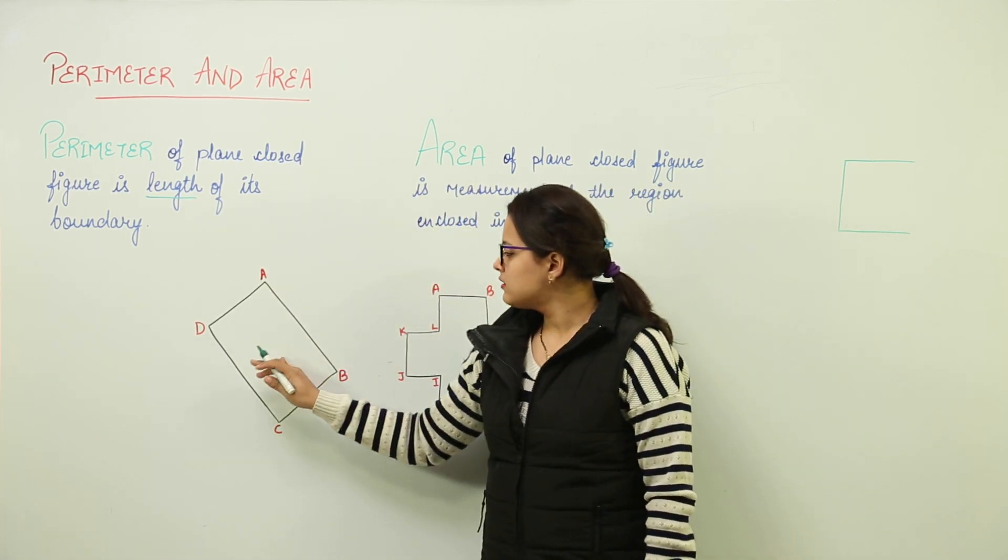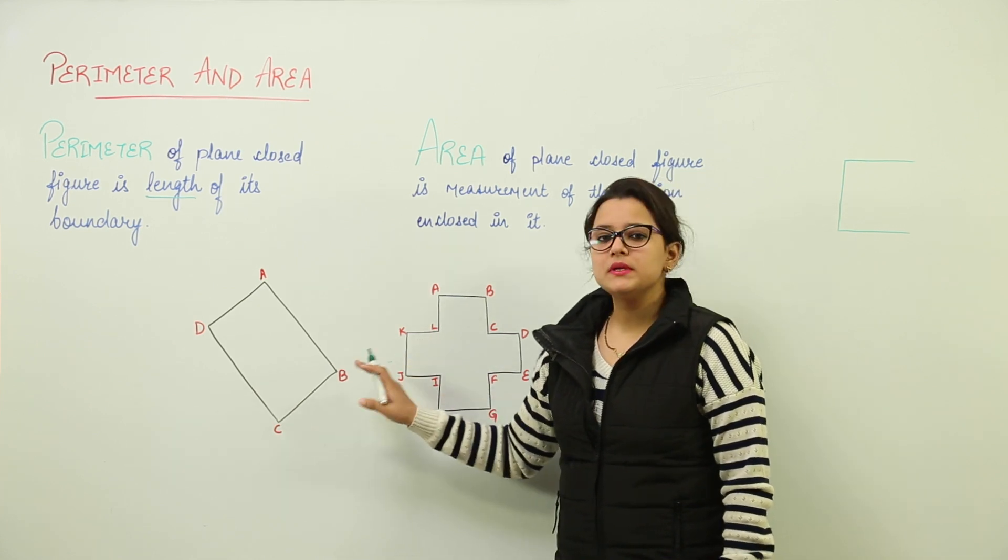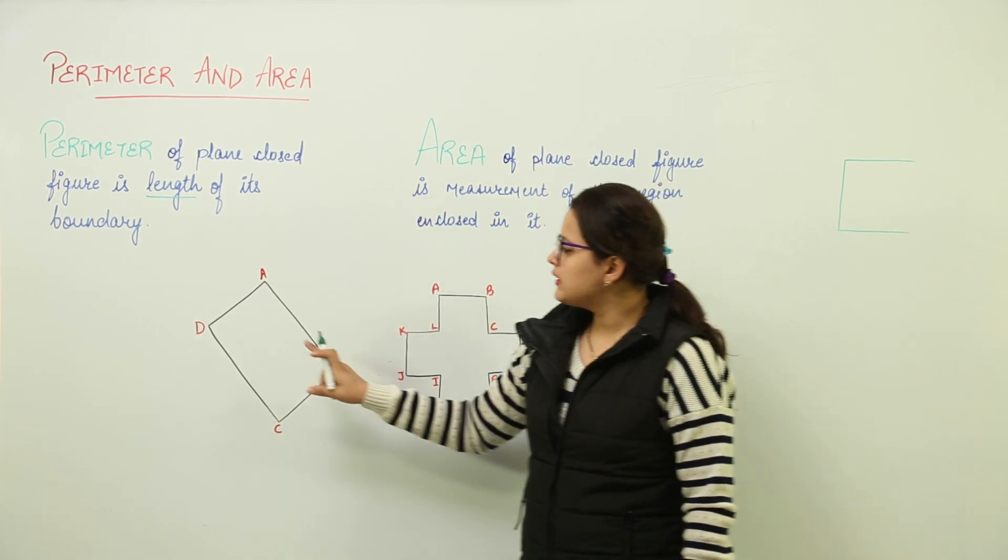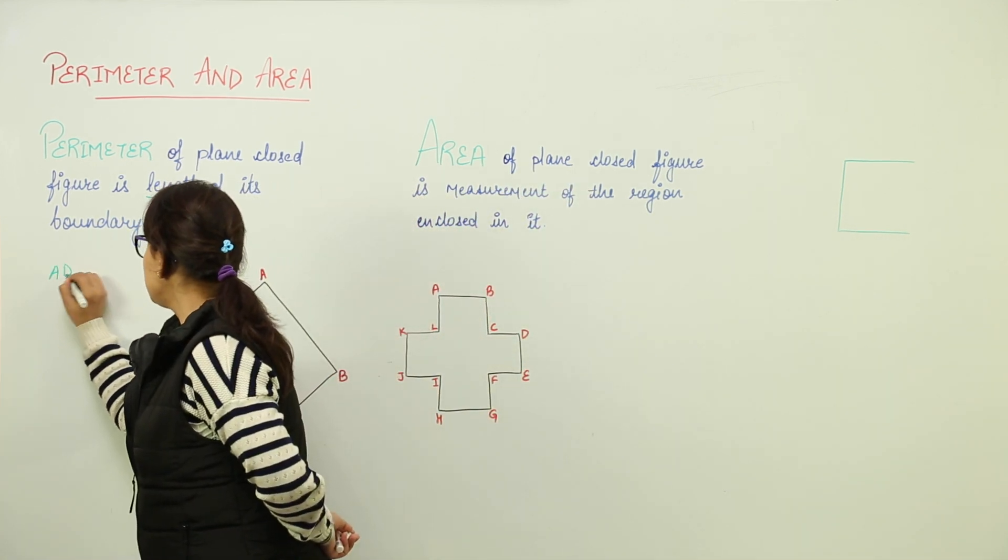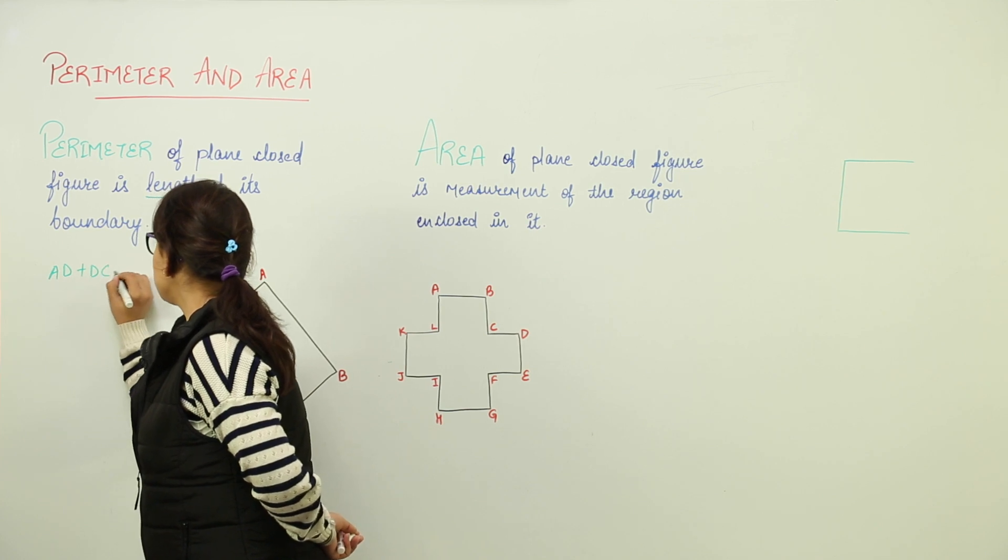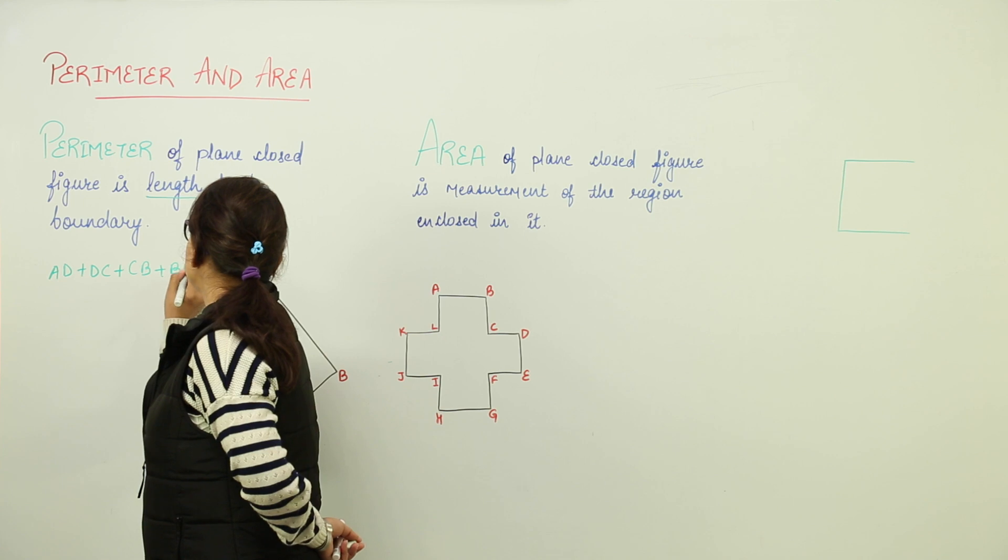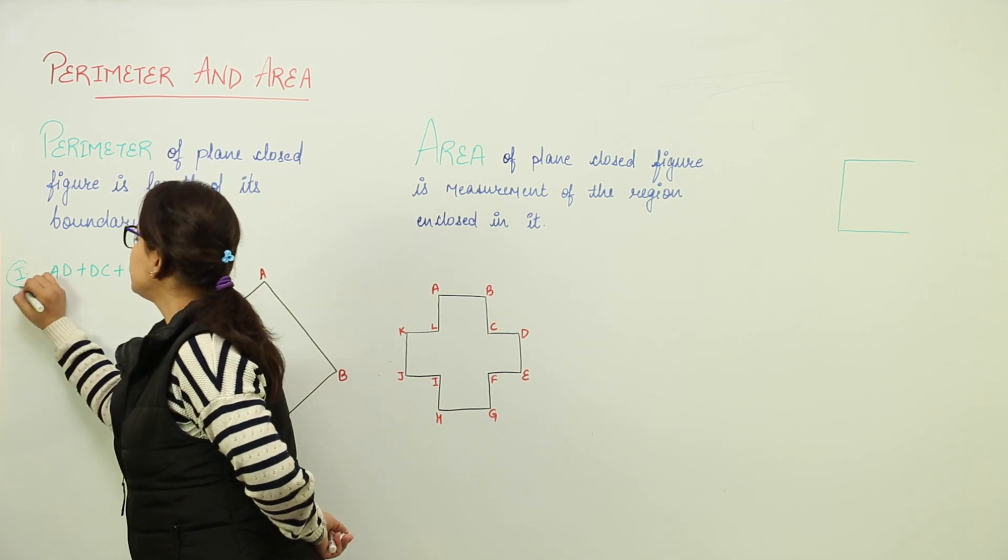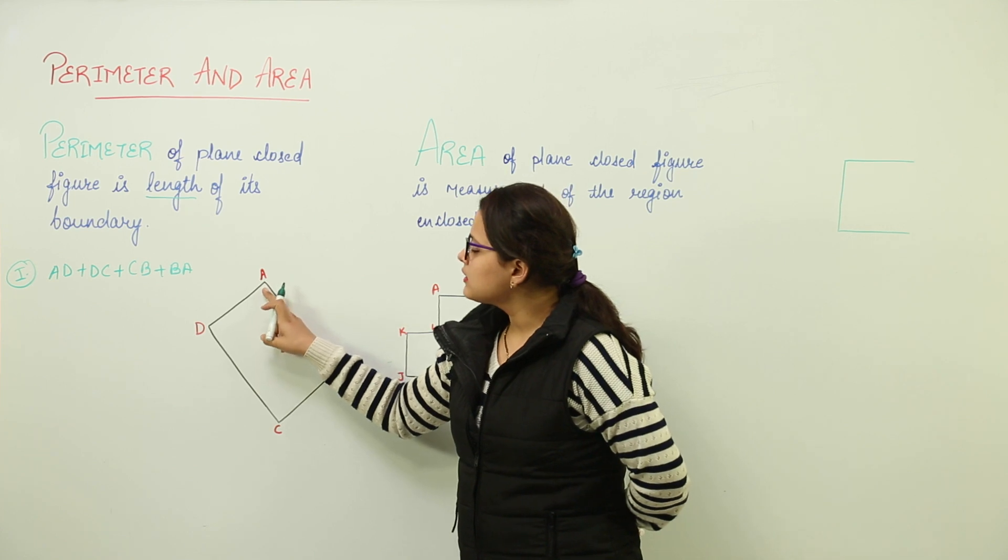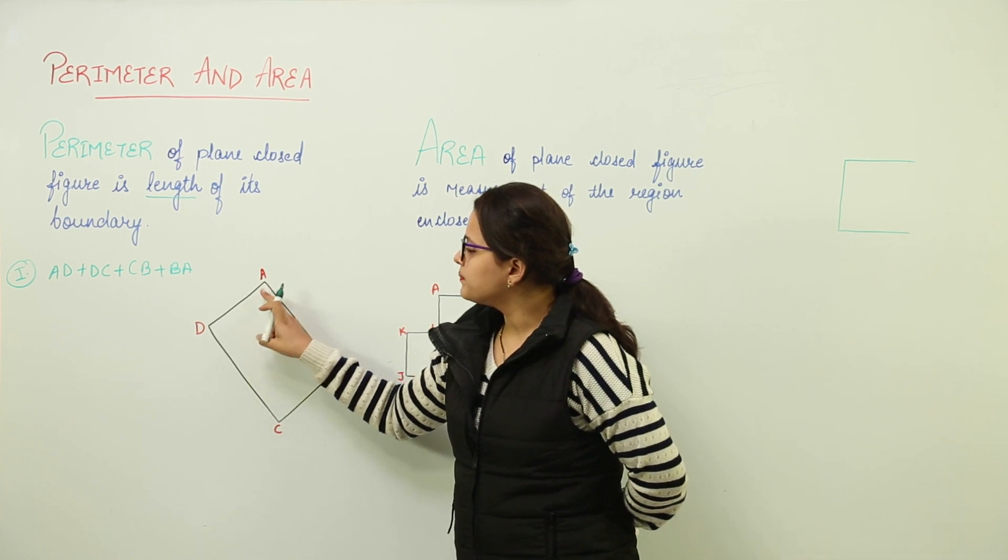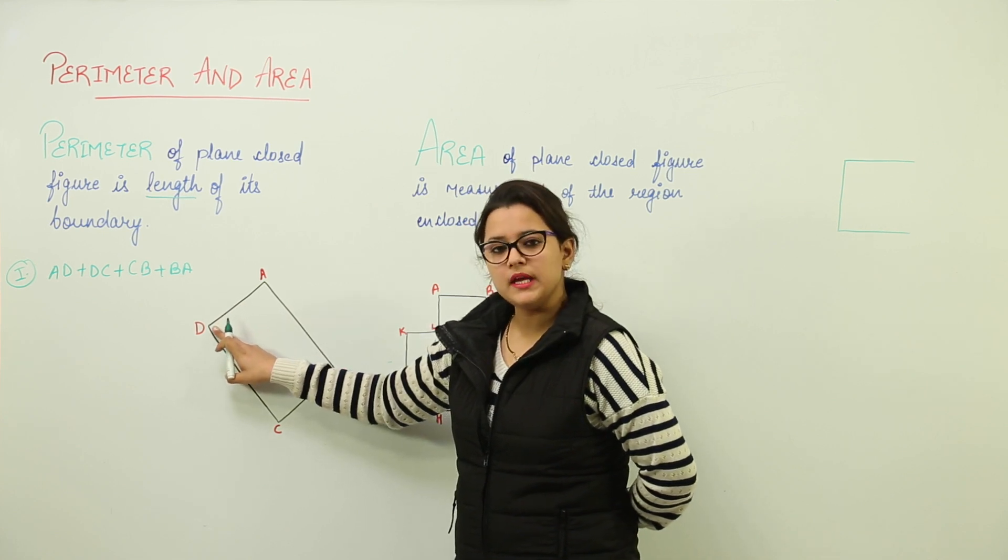See, here we have two examples. In both these shapes, what will be the length of the boundary? The length of the boundary for this would be equal to, if I write AD plus DC plus CB plus BA. You can check on your own. Let us check now. Together, you start from point A and start to move towards D. So, the length covered when you move from A to D will be AD.